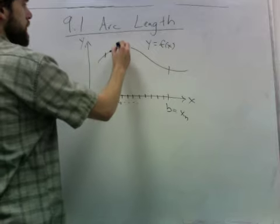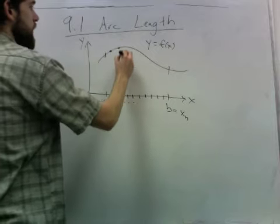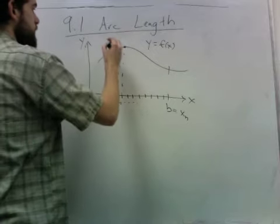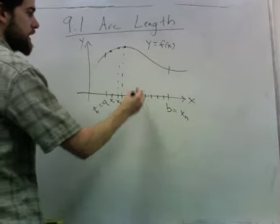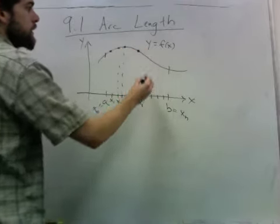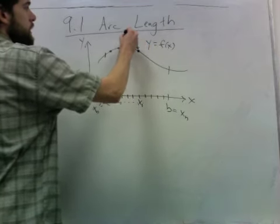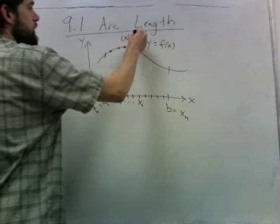And all of these points correspond to points on the graph. So let's label a generic point xi. And this point will be xi, comma, f of xi.